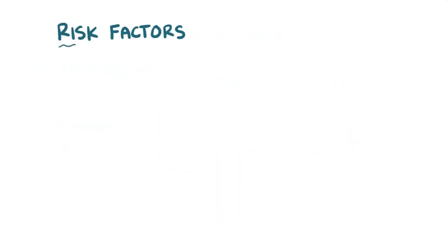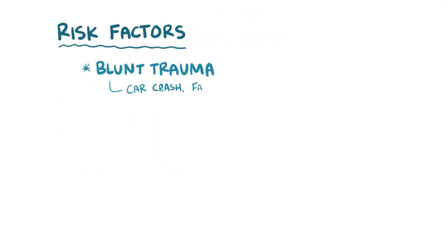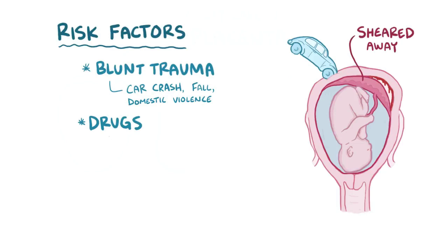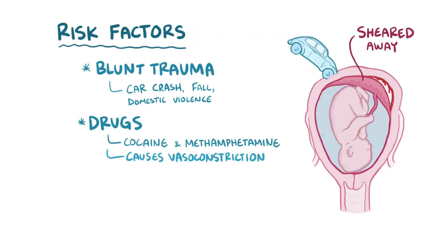Risk factors for placental abruption include acute events like blunt trauma from a car crash, fall, or domestic violence. This can happen because the placenta is less elastic than the uterus, and the strong forces from traumatic events like these can cause the placenta to shear away from the uterine wall. Use of certain drugs are also risk factors, like cocaine and methamphetamine, because these cause significant vasoconstriction of the placental blood vessels, as well as an abrupt increase in blood pressure, increasing the risk of an abruption.